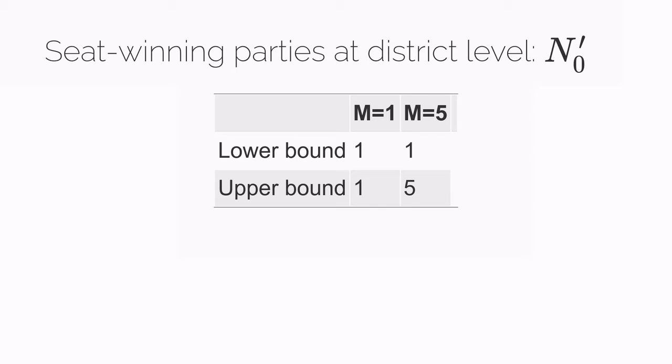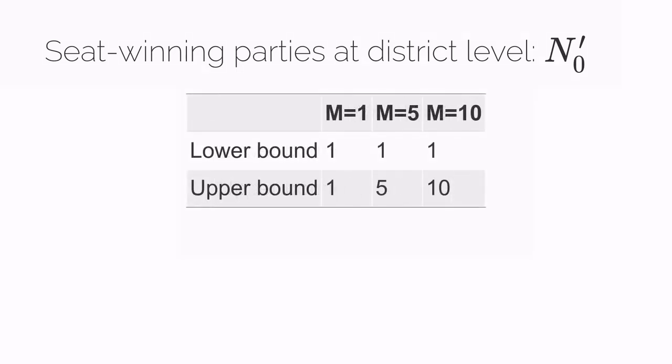We could repeat this exercise for a larger district magnitude, but the pattern is pretty obvious. This means that if someone asked us to guess how many distinct parties would win seats in a district of magnitude M, we could say that it has to be between the lower bound of one and the upper bound of M. We would never be wrong if we said this, but it's not very informative. So can we move beyond these bounds?